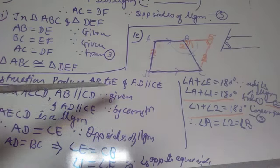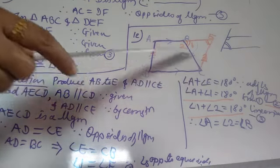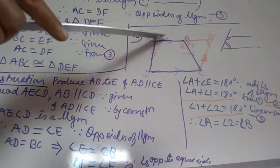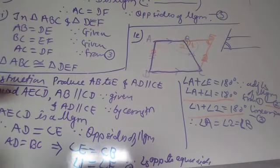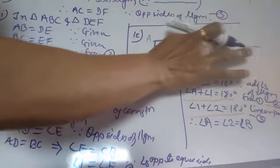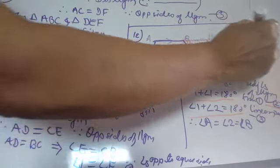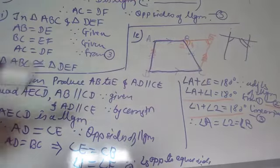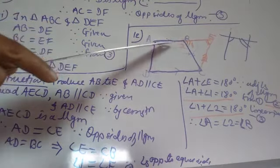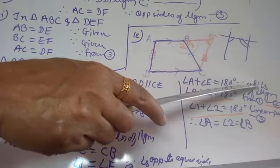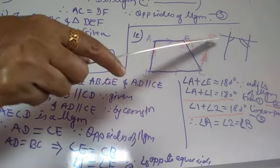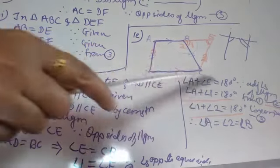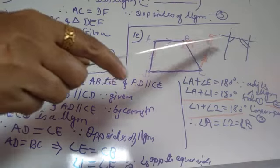AD and CE are two parallel lines with a transversal. Since AECD is a parallelogram, the adjacent angles sum to 180 degrees, so angle A plus angle E equals 180 degrees. Since angle E equals angle 1, we can write angle A plus angle 1 equals 180 degrees — this is equation 2.